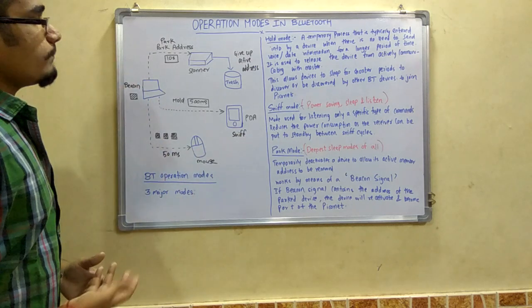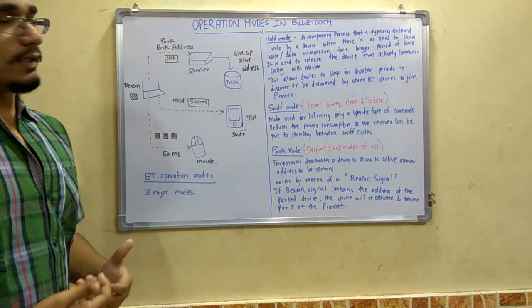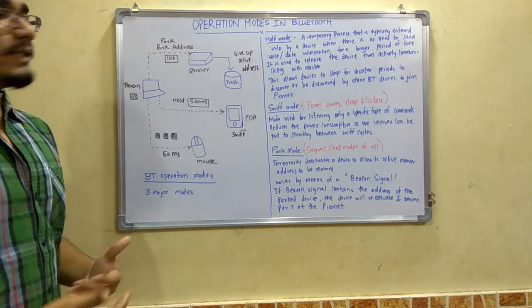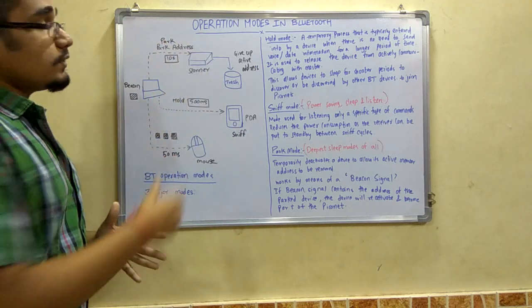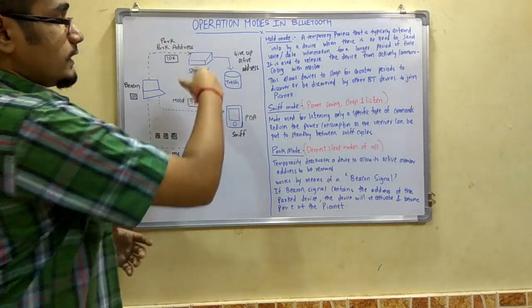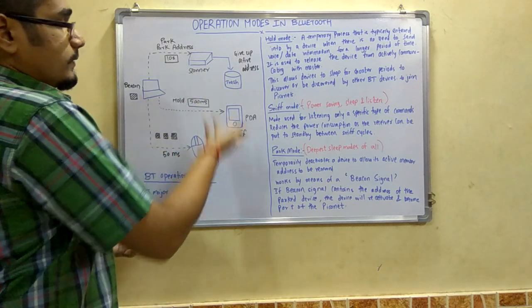Park mode works by sending a park address every 10 seconds. This address is sent in this diagram to a scanner, which will give up its active address.